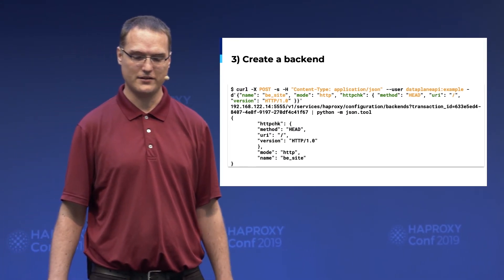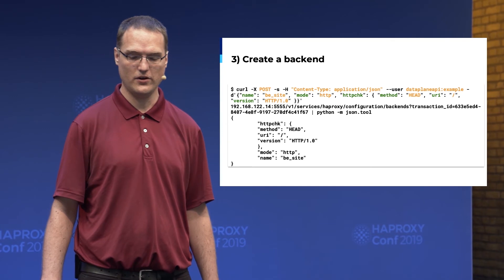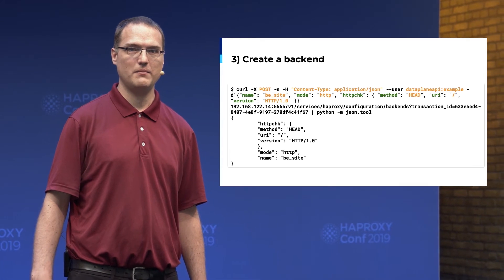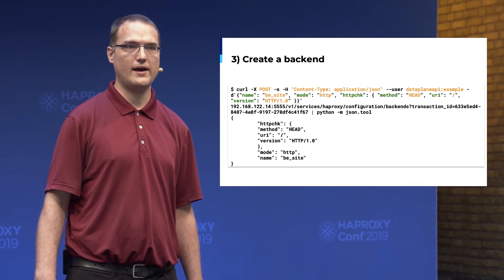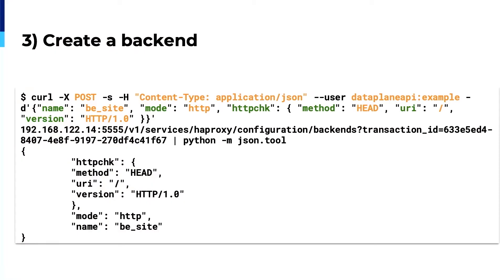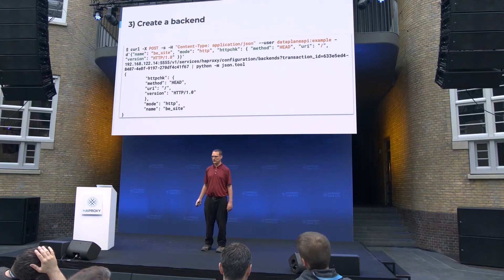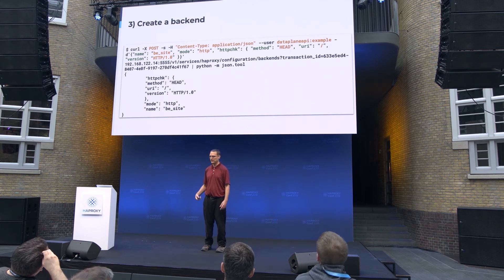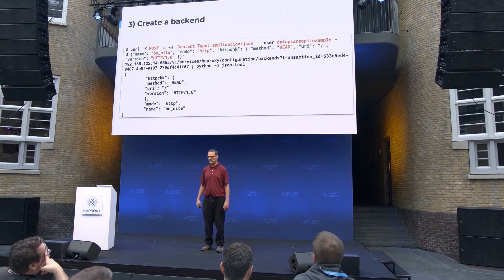Then you create a backend — relatively straightforward. You'll notice there are no server lines in this particular request, because we're going to add them in a minute. This is very useful if you just want to add a server to an existing backend without having to recreate the entire backend or respecify all your backend settings. All your usual load balancing methods and health check methods are available via this API, just as if you wrote it by hand.